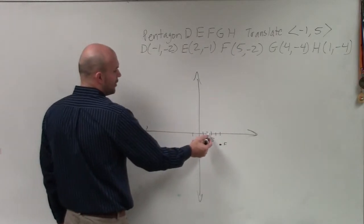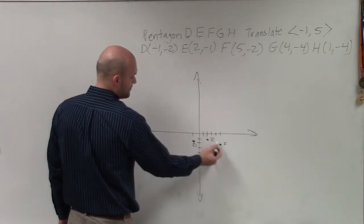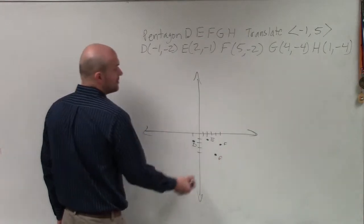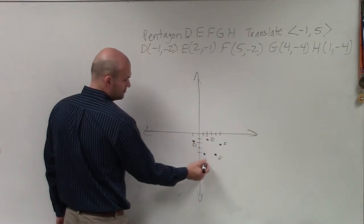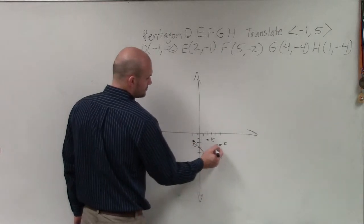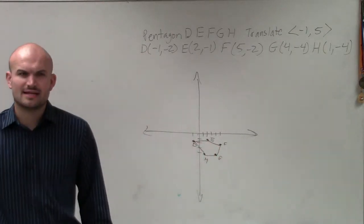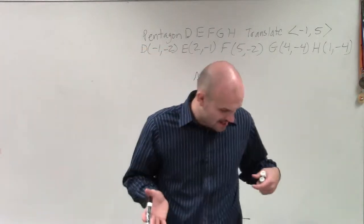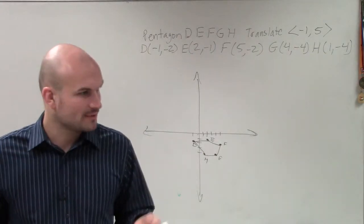Then I have 4, negative 4 — that point I'm going to label as G. And then I have H, which is 1, negative 4, which I'll label as H. So does everybody see what that looks like right there? The main important thing when doing a problem like this, guys, is we want to make sure we label each and every one of our points.